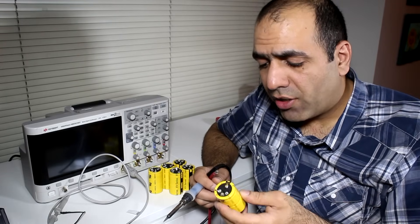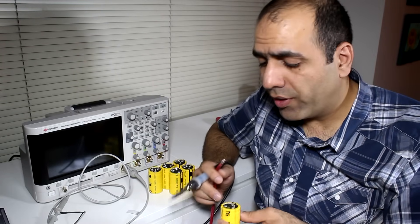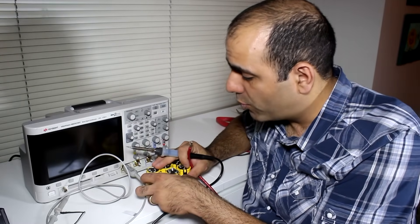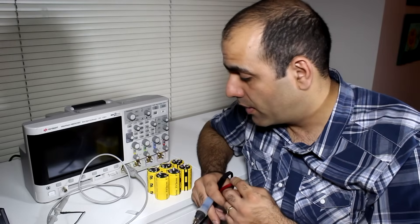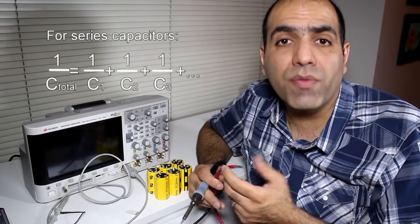The downside of the supercaps is that they are generally rated for low voltages like 2.7V. So, in order to increase my capacitor voltage, I have to put 6 of them in series in a bank to bring my voltage up to a maximum of 16.2V. But that means that my total capacitance will drop by 6 times to 66.6F.